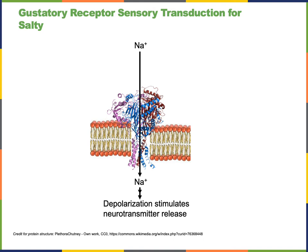The transduction mechanism for the salty taste involves sodium ions entering the gustatory receptor cells through a cation channel embedded in the plasma membrane. This influx of cations leads to depolarization of the gustatory receptor cell, stimulating the release of neurotransmitters onto the dendrites of the afferent neurons.